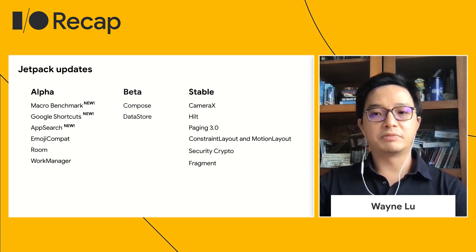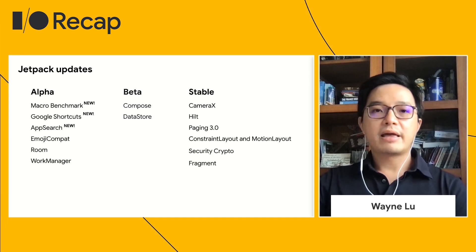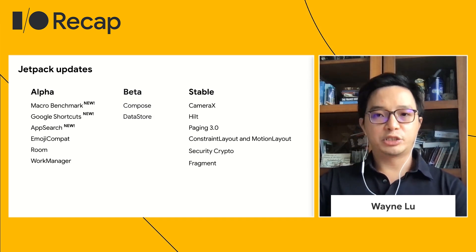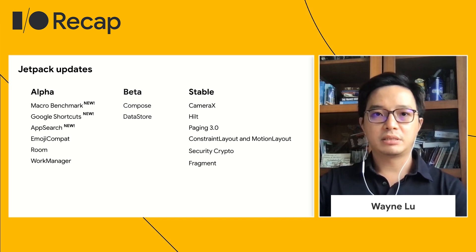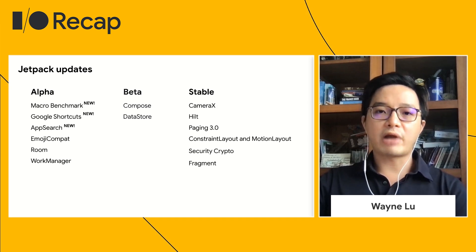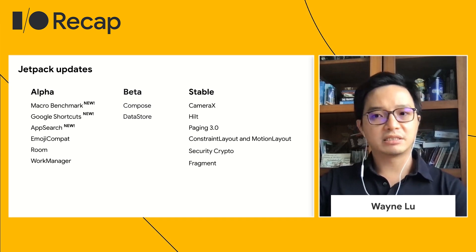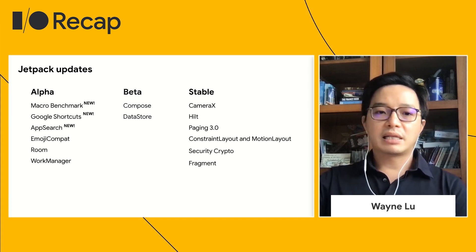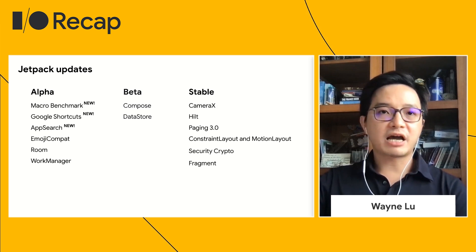New in this category is Macro Benchmark, Google Shortcuts, and App Search. Once the library is feature complete, it moves to beta for stabilization. In very rare instances, the APIs may change due to feedback from developers. Lastly, we have APIs that are stable.